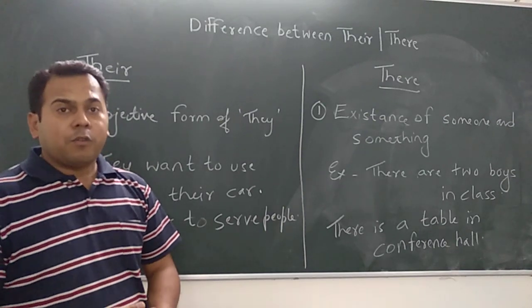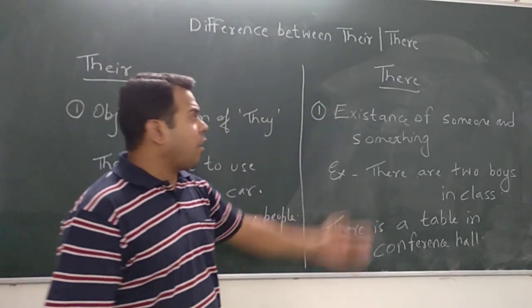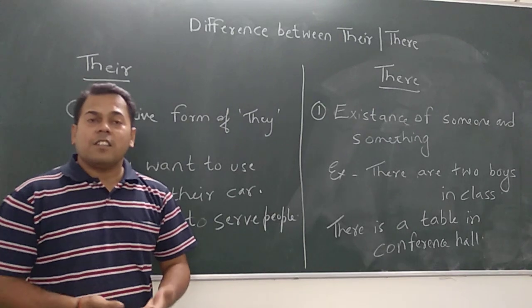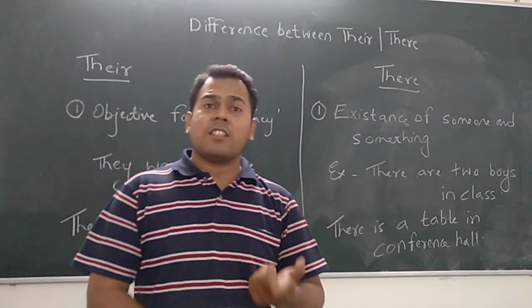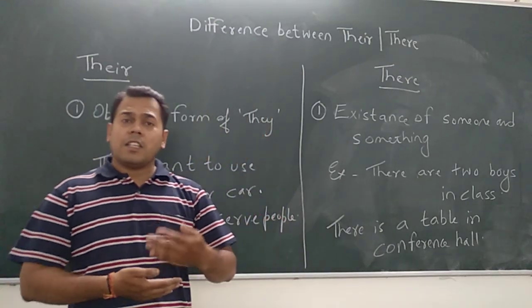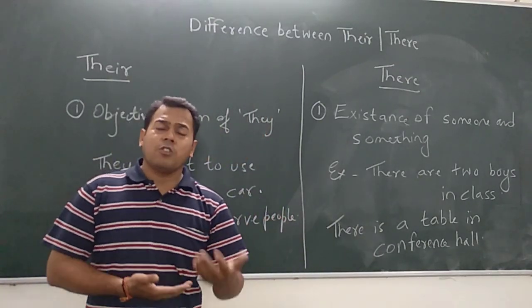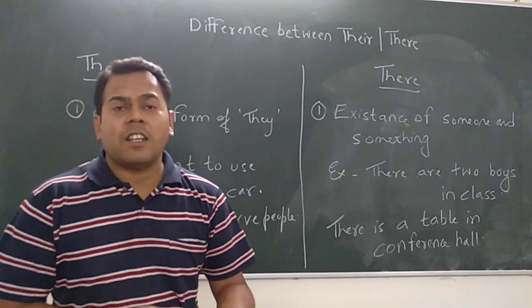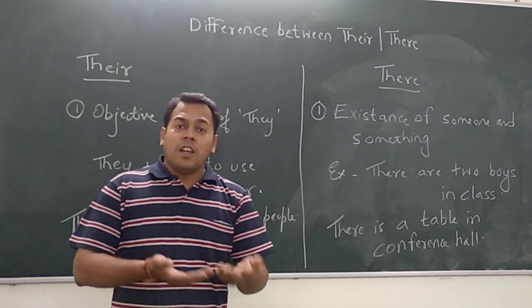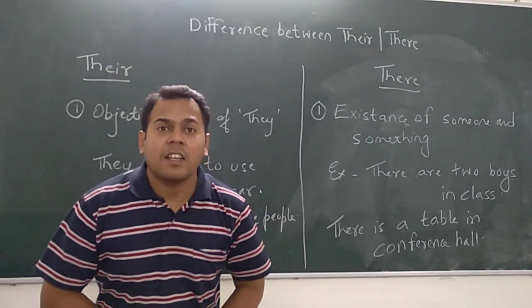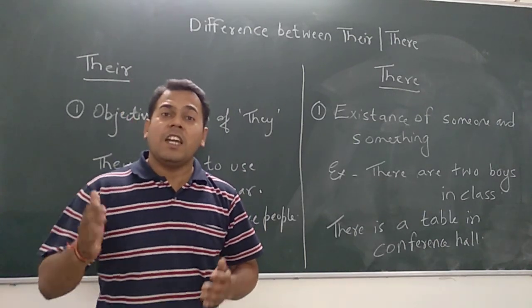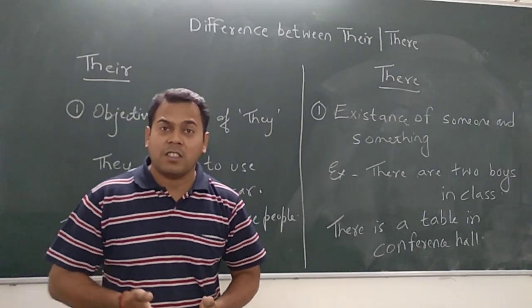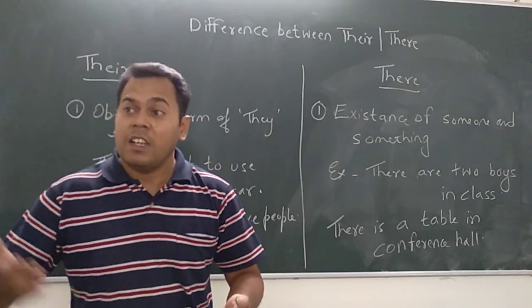Now let's move to the second category T-H-E-R-E. There is used to show the existence of someone and something. It is a startup phrase used to start a sentence. You might have heard people saying that he is there. Friends, it is incorrect phrase. We should use there he is. This is the correct phrase to show the existence of someone.